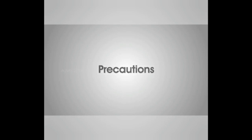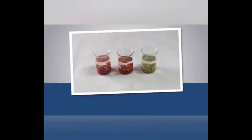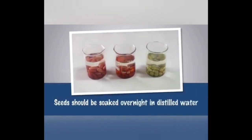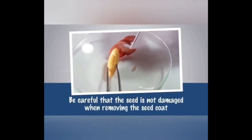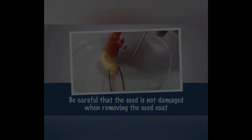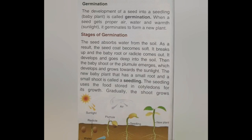Precautions: seeds should be soaked overnight in distilled water. Be careful that the seed is not damaged when removing the seed coat. In the last video, we have seen the parts of a seed and some activities. Now, in the next part on germination, we will study how a seed germinates. We have seen how the seed can germinate through the activity.